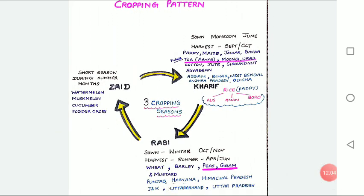Some important Rabi crops are wheat, barley, peas, gram and mustard. These crops are grown in large parts of India. States from the north and north-western parts such as Punjab, Haryana and Himachal Pradesh are important for the production of wheat and other Rabi crops. The success of the Green Revolution in Punjab, Haryana, western Uttar Pradesh and parts of Rajasthan has also been an important factor in the growth of these Rabi crops.